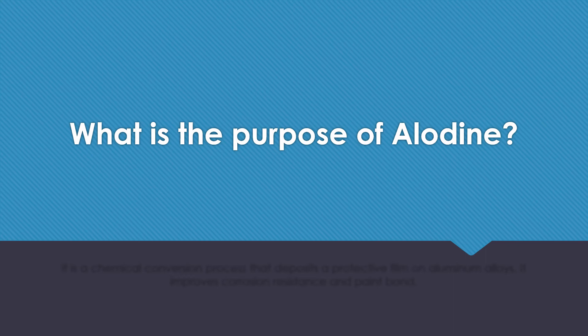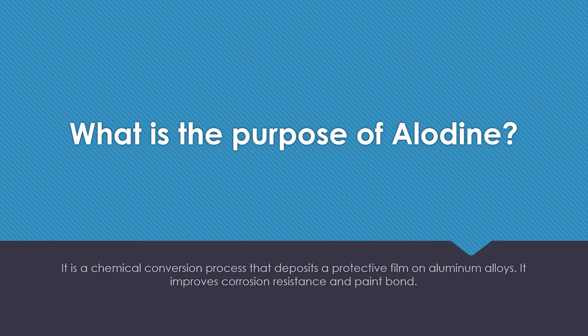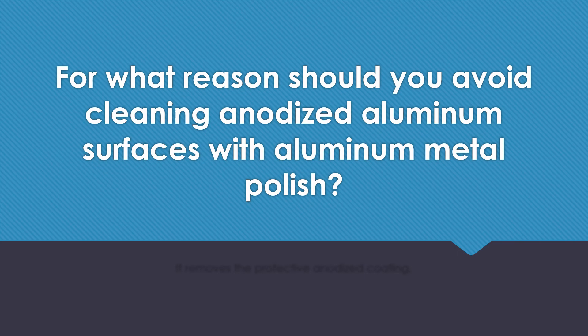What is the purpose of alodine? It is a chemical conversion process that deposits a protective film on aluminum alloys. It improves corrosion resistance and paint bond. For what reason should you avoid cleaning anodized aluminum surfaces with aluminum metal polish? It removes the protective anodized coating.